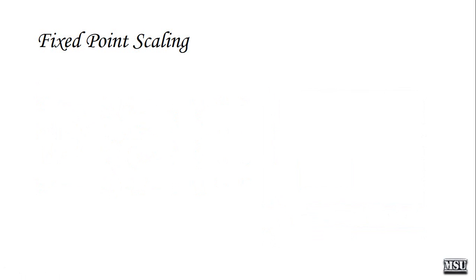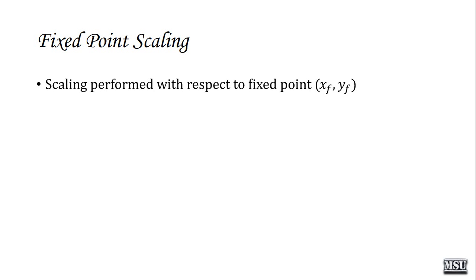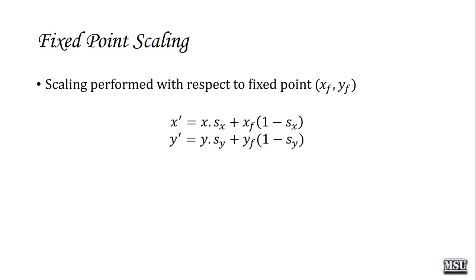There is another type of scaling called fixed point scaling. With respect to any one fixed point, you can perform scaling. Normally, scaling just increases or decreases the object size relative to the origin. But with fixed point scaling, the size is increased or decreased with respect to a chosen point XF comma YF. The formula is: X dash equals X into SX plus XF into (1 minus SX), and Y dash equals Y into SY plus YF into (1 minus SY).